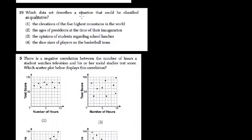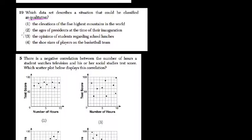Which data set best describes a situation that could be classified as qualitative? Quantitative, the opposite of qualitative, is about numbers and measurement. Qualitative is about measuring quality. So here, the opinions of students is a qualitative measure.